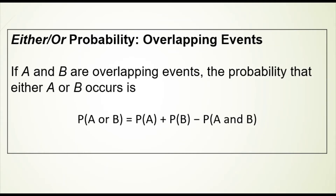With overlapping events, it's mostly the same, except we have to subtract out the probability that both occurred together. So if we're looking at the probability of getting a green marble or a big marble, we take the probability of getting a green marble plus the probability of getting a big marble, but then subtract out the probability of getting a big green marble. So if A and B are overlapping events, the probability of A or B equals the probability of A plus the probability of B minus the probability of A and B.